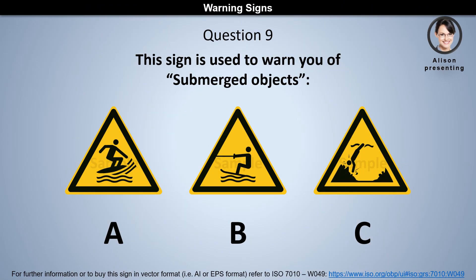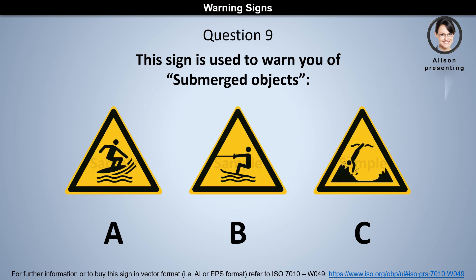Question 9. This sign is used to warn you of submerged objects. Is it A, B, or C? The answer is C.